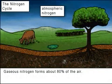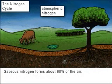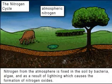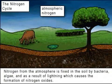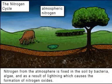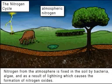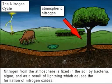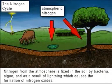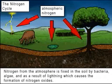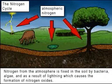Gaseous nitrogen forms about 80% of the atmosphere. Nitrogen from the atmosphere is fixed in the soil by bacteria, algae, and as a result of lightning, which causes the formation of nitrogen oxides.